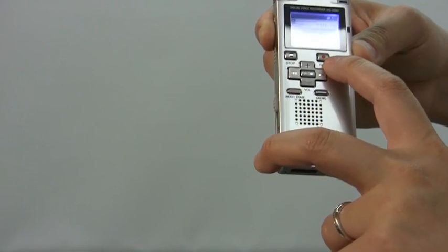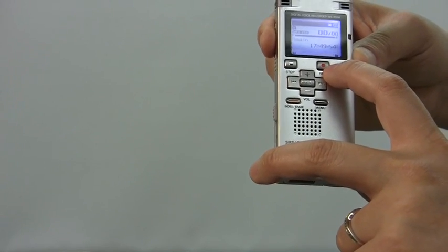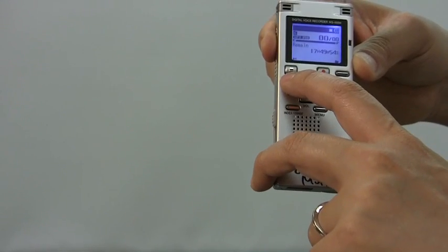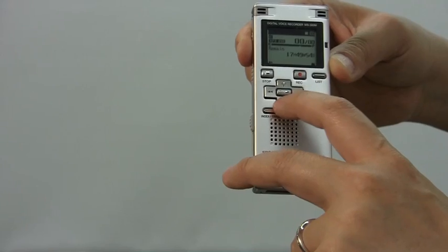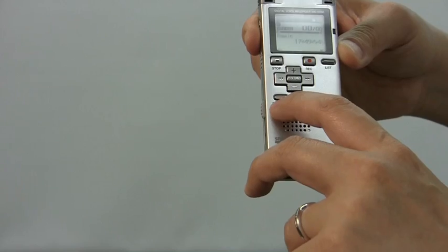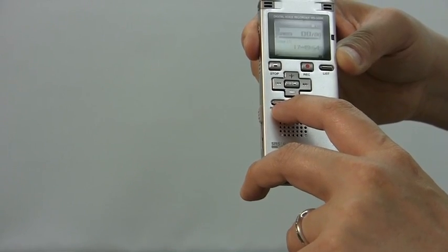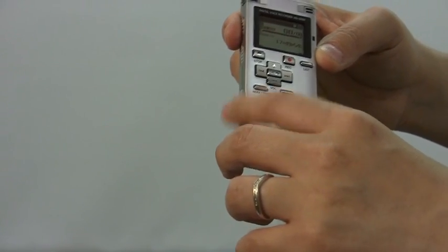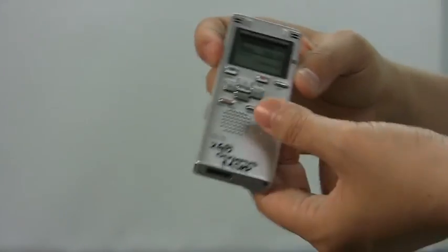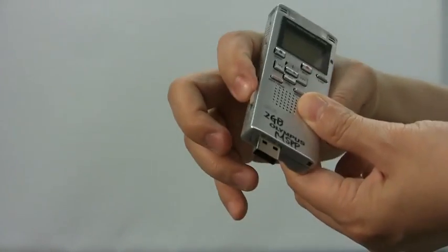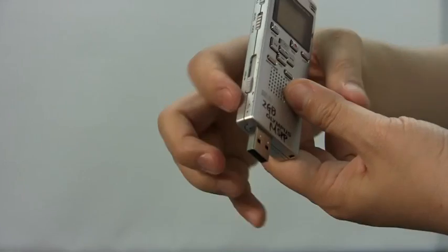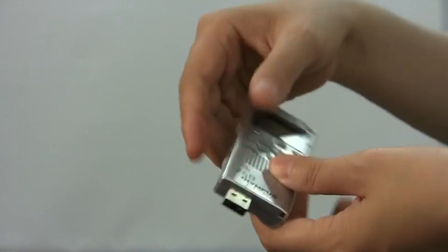One more time, to start recording is the red button. To stop is the left button. To playback is the middle section. To erase the file is the left bottom corner. And once you are all set, you want to copy the file, just twist the USB button and plug into your USB port on the computer.